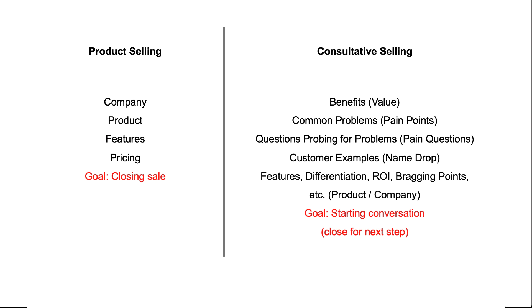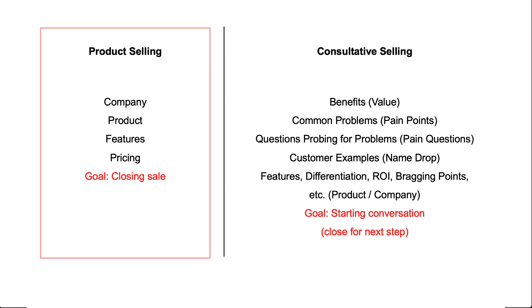If I go back to the Smart Sales System slide, we've been comparing product selling — which is what the majority of salespeople do, including on LinkedIn — versus a consultative approach. If someone's in product selling mode, they're going to send that kind of message. It basically follows this flow: this is who I work for, this is what I'm selling, do you need what I'm selling, I want to schedule a meeting to sell to you. That's a product selling email.